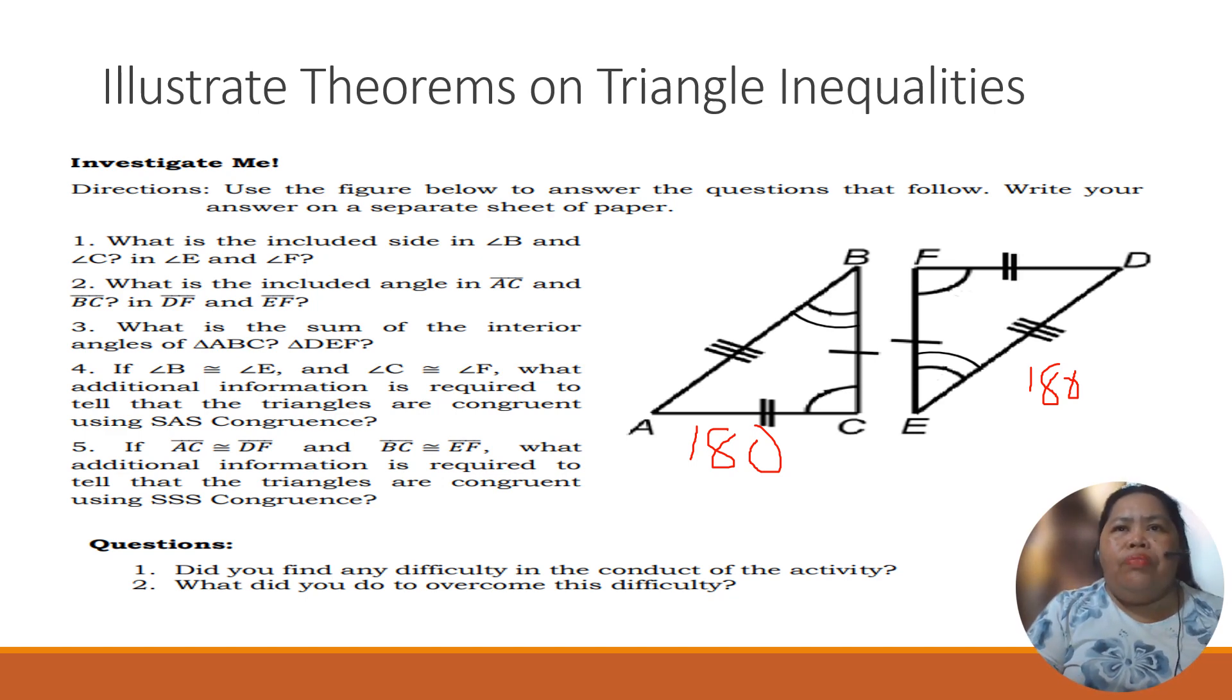Now, if angle B is congruent to angle A and angle C is congruent to angle F, what additional information is required to tell that the triangles are congruent using SAS? Of course, two sides must be congruent if we are going to use the SAS congruence.